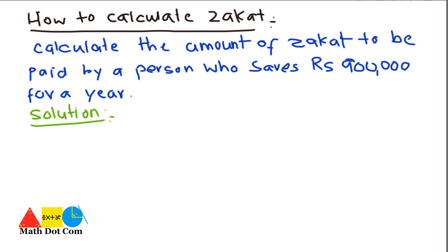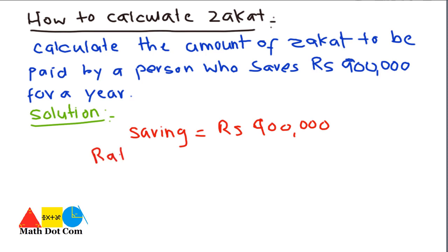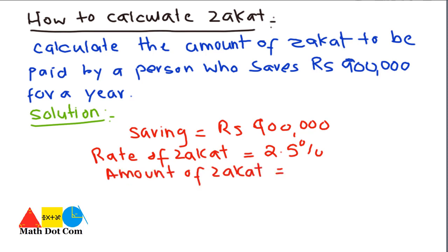First of all, we will write what is given in the problem and then solve it. The given is the saving, that is rupees 9 lakh, which is 900,000. The rate of zakat fixed in Islam is 2.5% of the wealth. What is unknown here is the amount of zakat that you have to pay on the wealth.